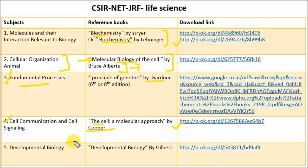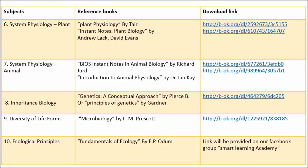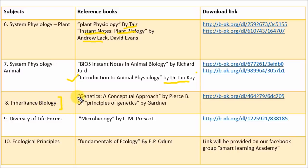The fifth chapter is Developmental Biology — refer Developmental Biology by Gilbert. The next chapter is System Physiology: Plant — refer Plant Physiology by Taiz, or Instant Notes in Plant Biology by Andrew Lack; download links are provided. The next chapter is System Physiology: Animal — refer Introduction to Animal Physiology by Dr. Ian Kay. The next chapter is Inheritance Biology — refer Genetics: A Conceptual Approach by Pierce. For Diversity of Life Forms, refer Microbiology by Prescott. For Ecological Principles, refer Fundamentals of Ecology by E.P. Odum — the link will be provided on the Facebook group.